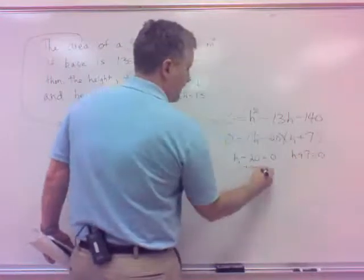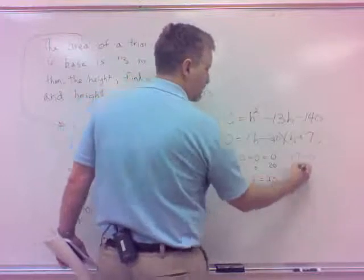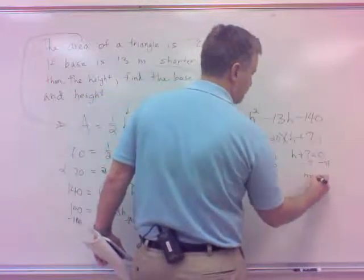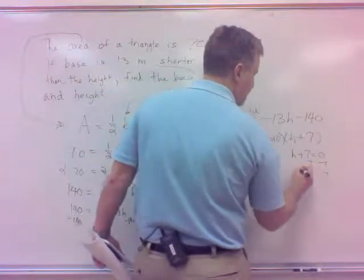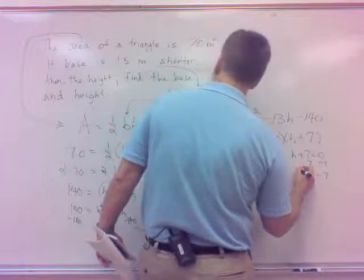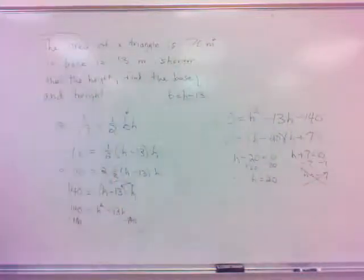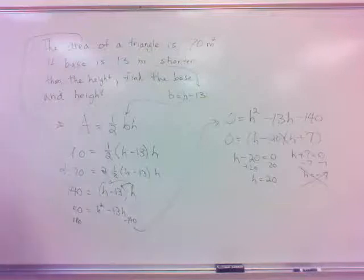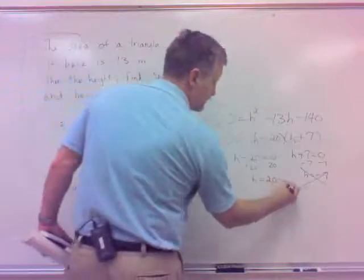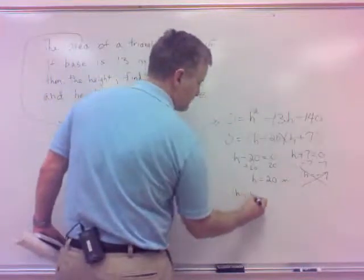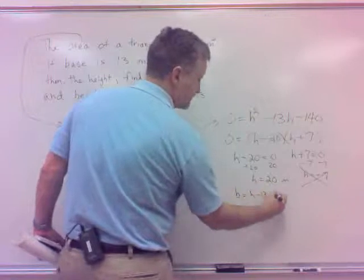Add 20, you've got H as 20. Subtract 7, you've got H as negative 7. Again, like the triangle lengths, you can't have a height that's negative either. So height is 20, it would be 20 meters. What about the base? Well, the base is H minus 13, so that would be 7 meters, wouldn't it?